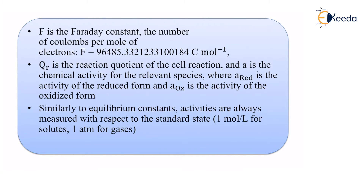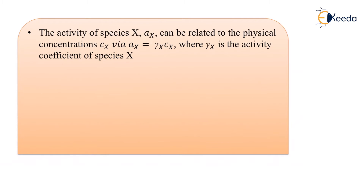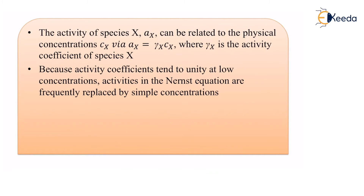Similar to equilibrium constants, activities are always measured with respect to standard state: 1 mole per liter for solutes and 1 atmosphere for gases. The activity of species X, A-x, can be related to the physical concentration C-x via A-x equals γ-x times C-x, where γ-x is the activity coefficient of species X. Because activity coefficients tend to unity at low concentration, activities in the Nernst equation are frequently replaced by simple concentrations.